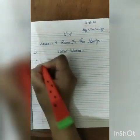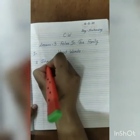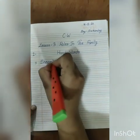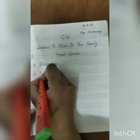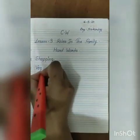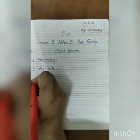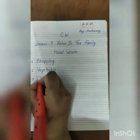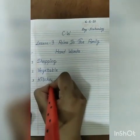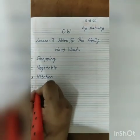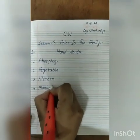Number one: shopping — S-H-O-P-P-I-N-G. Number two: vegetable — V-E-G-E-T-A-B-L-E. Number three: kitchen — K-I-T-C-H-E-N. Number four: market — M-A-R-K-E-T.